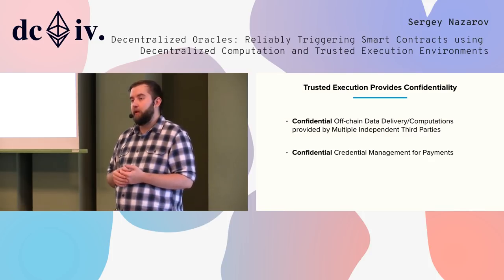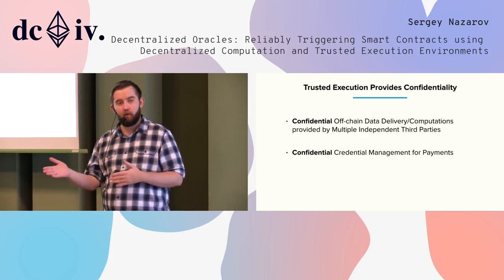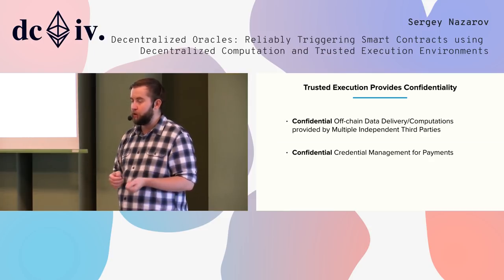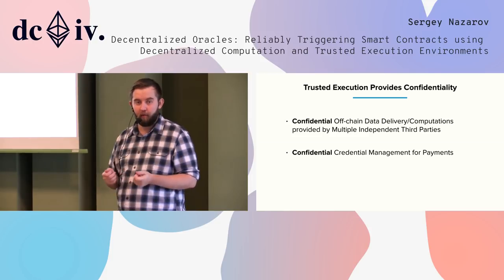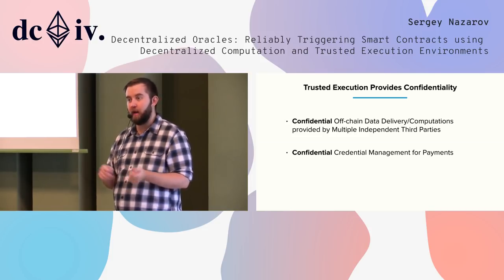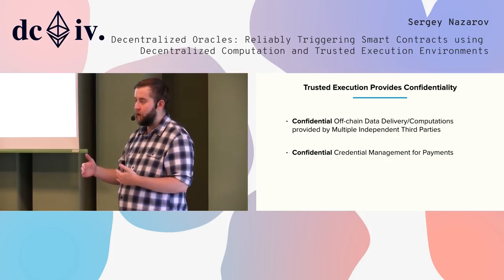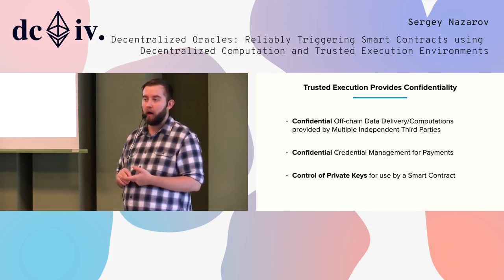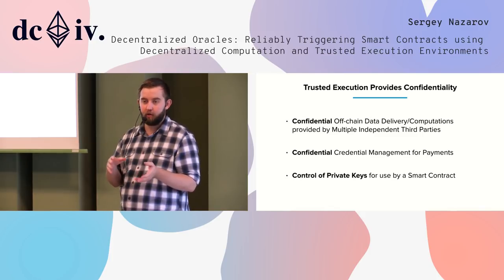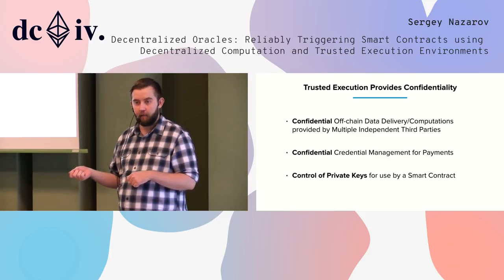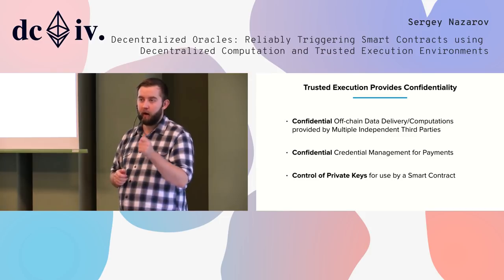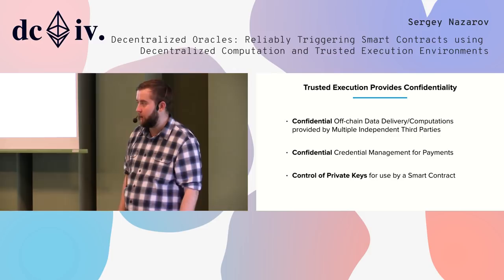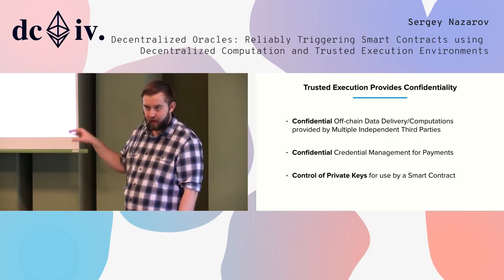Some of the other large benefits are things like credential management. If you want a Chainlink node to sign Bitcoin transactions or send payments into bank systems, that's going to require credentials — passwords, usernames, and all kinds of credentials that basically affect payment. The more secure an environment you have to hold those credentials, the better off you're going to be, because those credentials are worth the money they control. This creates an environment that adds another level of security and increases the overall reliability of the network. Additionally, this gives control of private keys to third parties that can use those private keys to sign transactions on other chains or other infrastructure on behalf of the contract — a pretty unique piece of functionality.